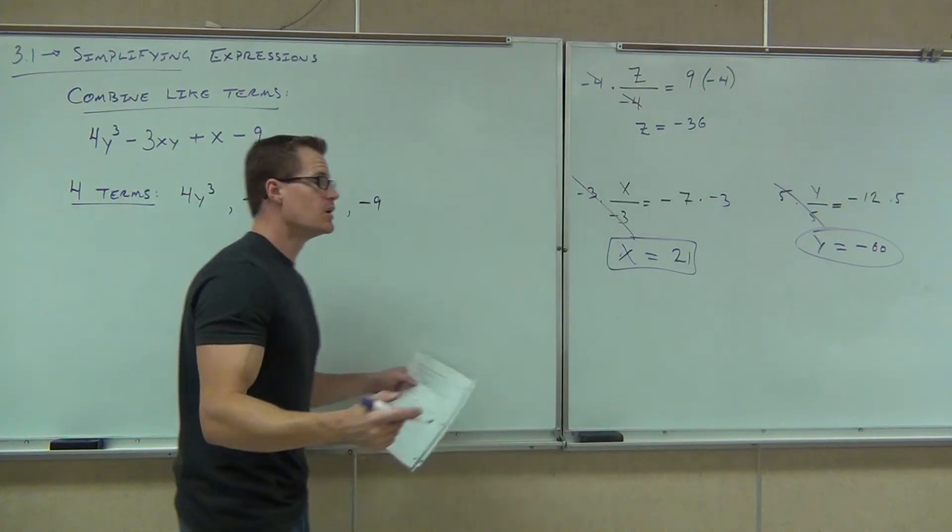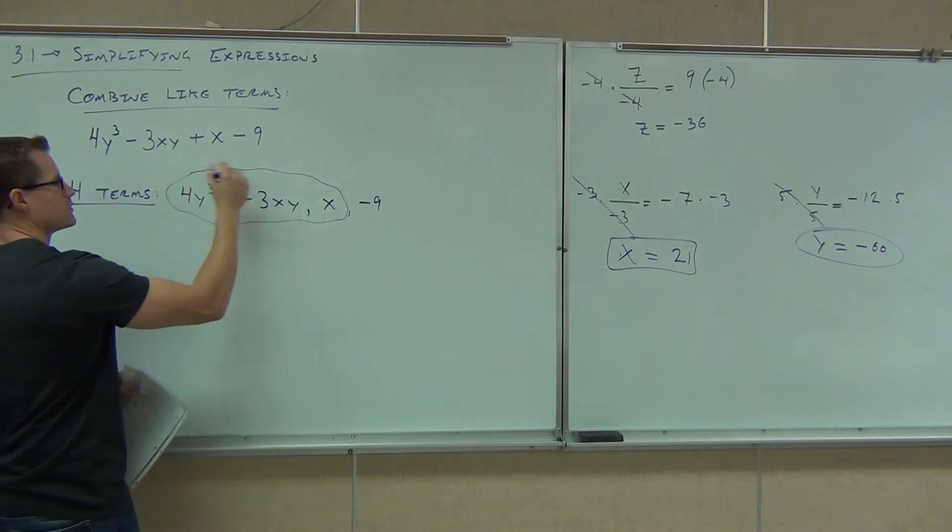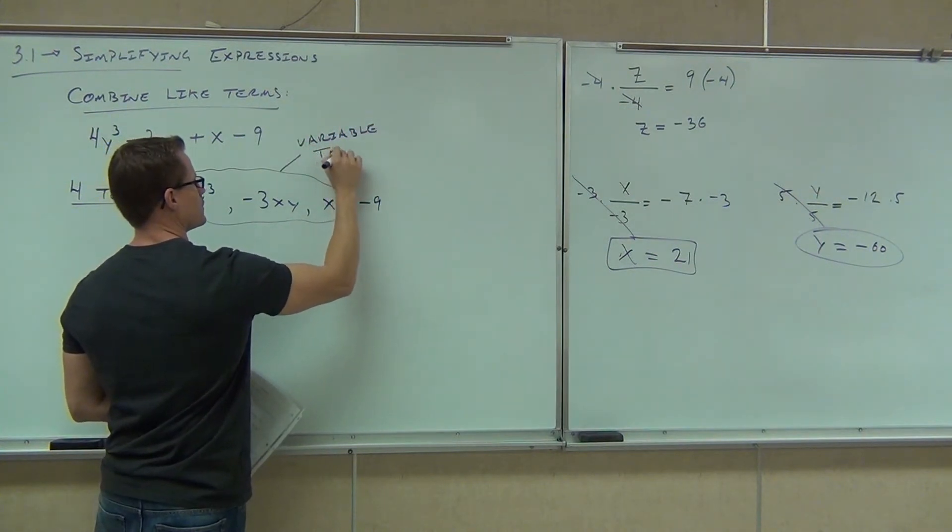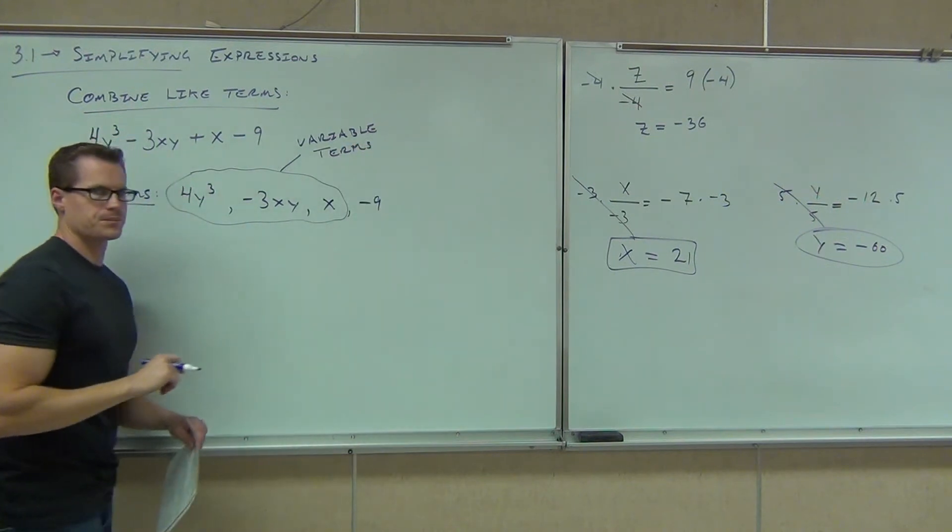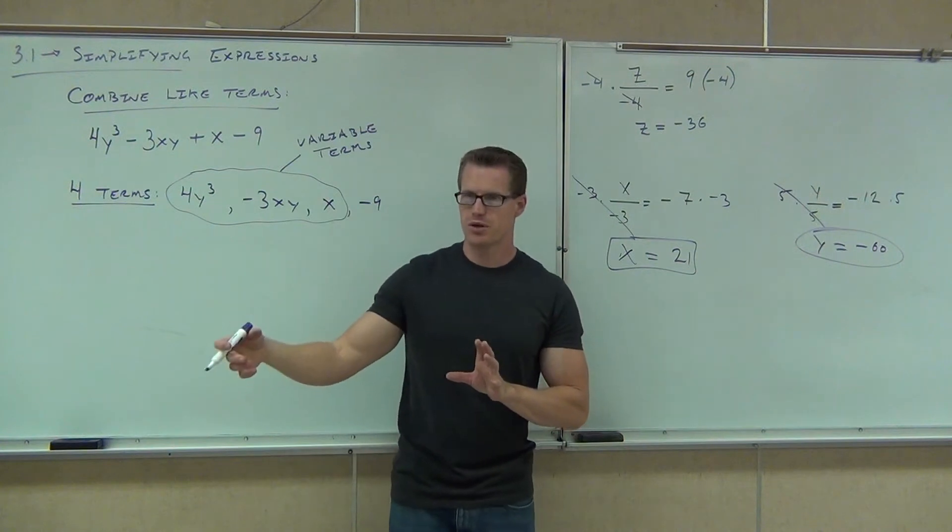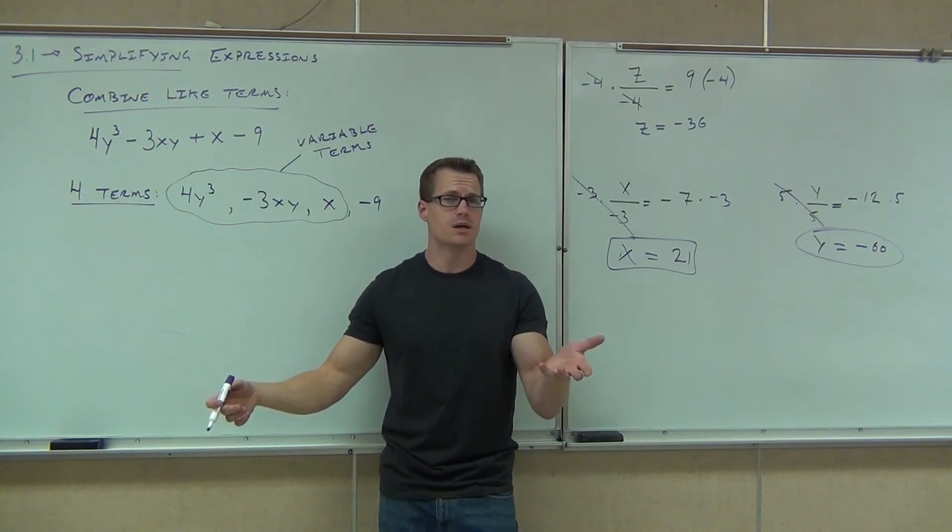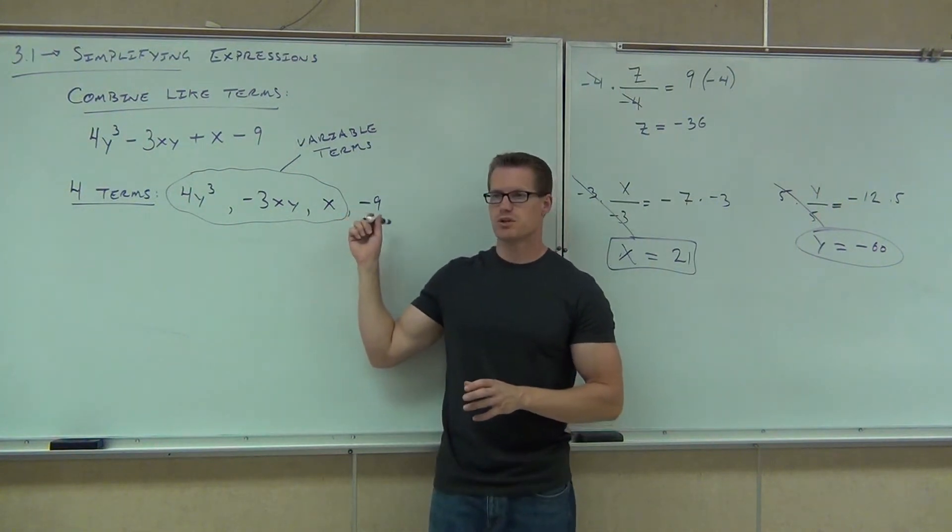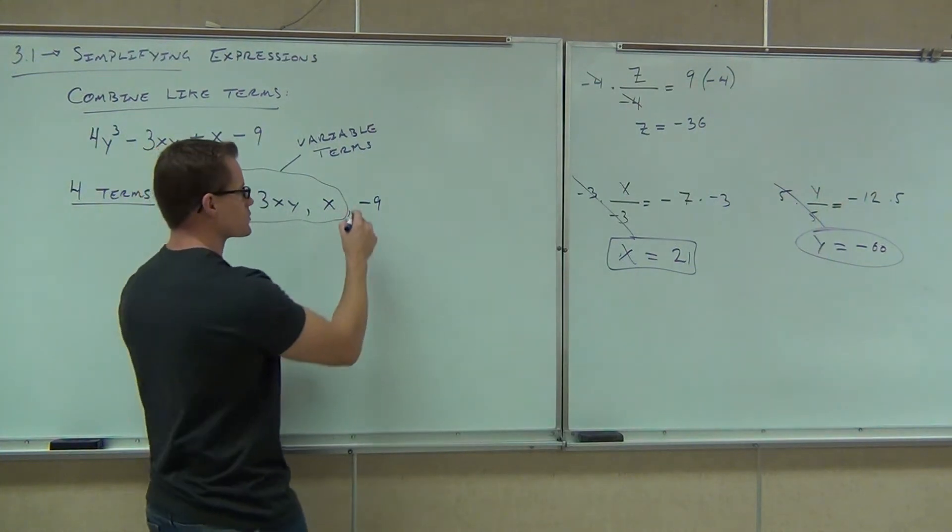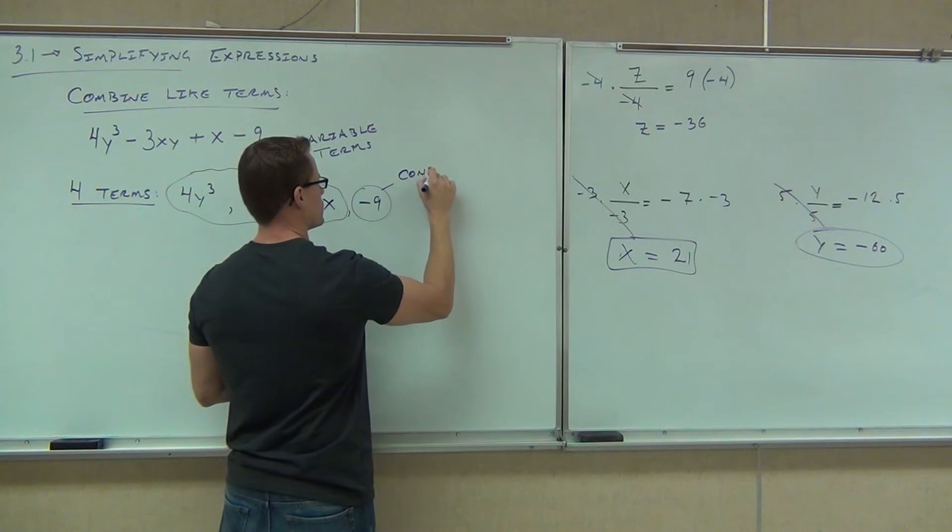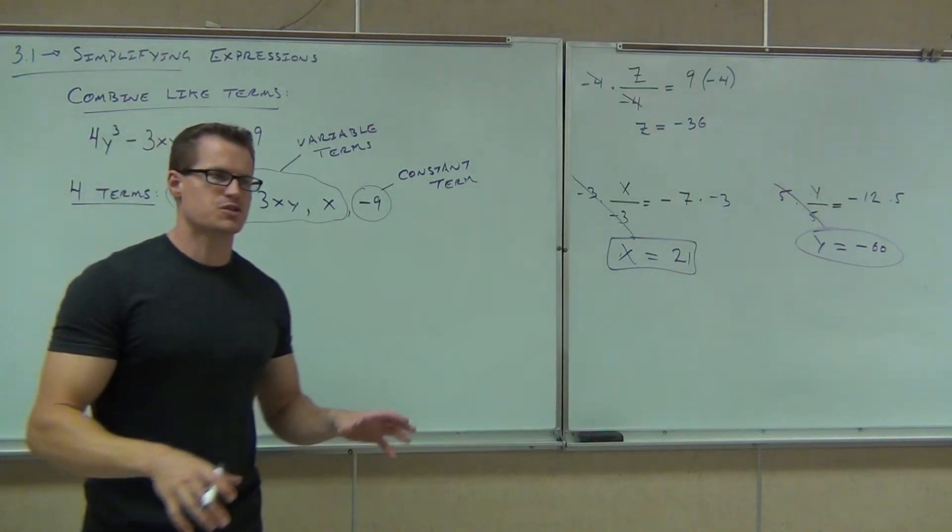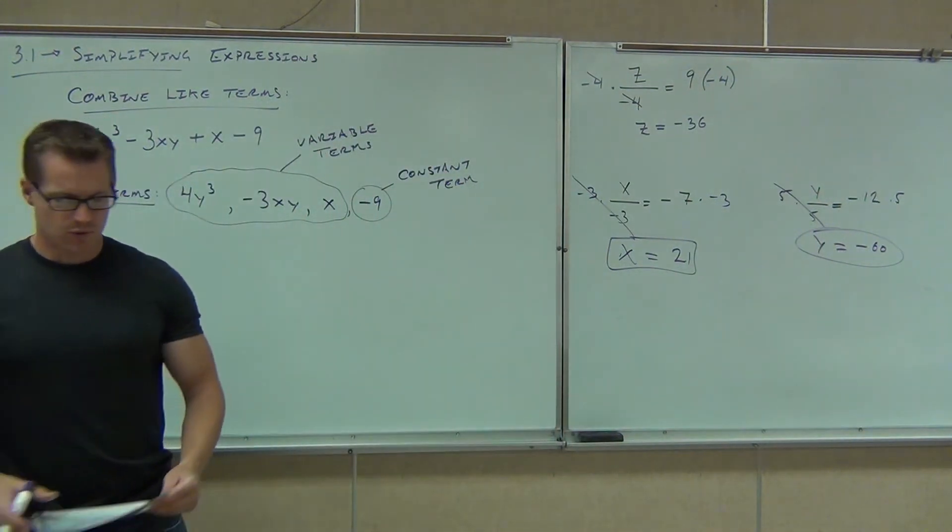The variable terms are named so because they have variables in them. A number all by itself without a variable is called a constant term. Now the term variable means it can change depending on the number you plug in. That's what's a variable. You can plug in whatever number you want. Does a constant term ever change? For example, is negative 9 ever going to change? No, because it's constant. No matter what you plug in, the negative 9, there's nothing attached to it. It's not changing. So we call it the constant as in it doesn't change.